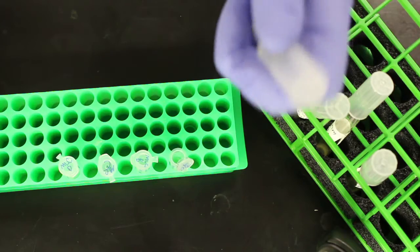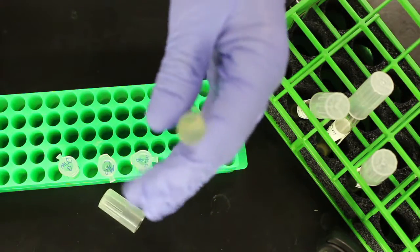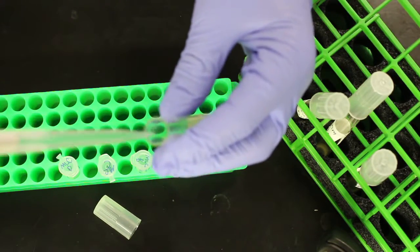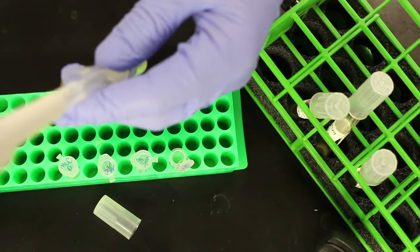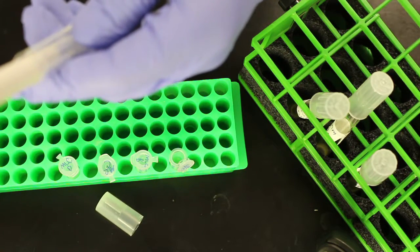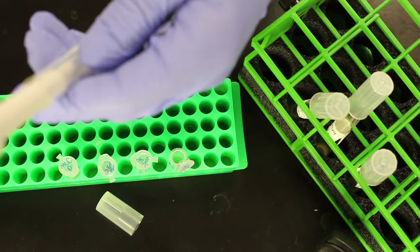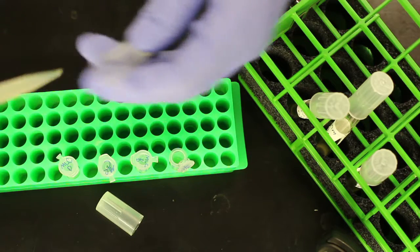This saves time because you don't need to obtain competent cells and re-transform to get the desired DNA. It is possible to store the bacteria on an agar plate at four degrees Celsius for a couple weeks, but the glycerol stabilizes the frozen bacteria and the stock can be stored for many years.